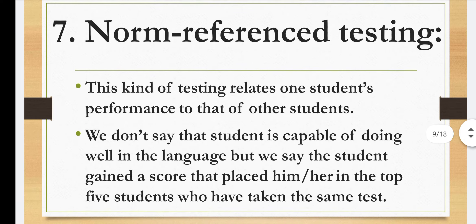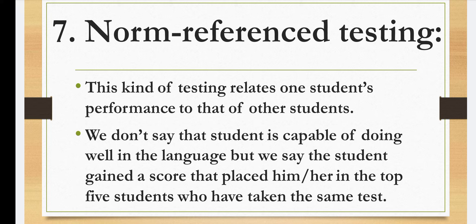Next is norm reference testing. This kind of testing relates one student's performance to that of other students — we compare how well each student did and what differences exist. We don't say that a student is capable of doing well in language, but we say that the student gained a score that places him or her in the top 5 students who have taken the same test — we can rank students based on capability.